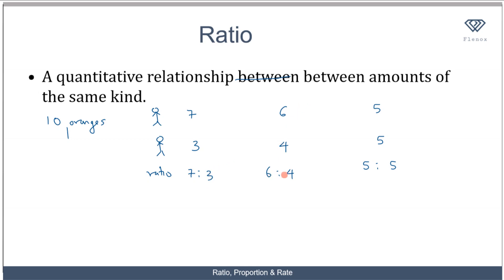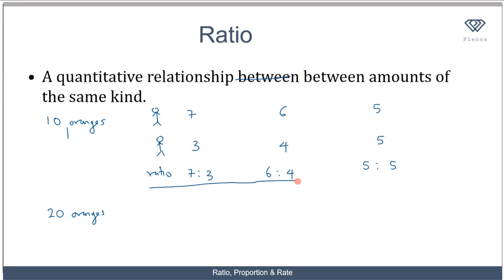For every 6 I take, the other person is going to take 4. And for every 5 I take, it's going to take 5. So how does this picture change when I have 20 oranges? So if I have 20 oranges to share and I decide to share them in this ratio, what am I going to receive?